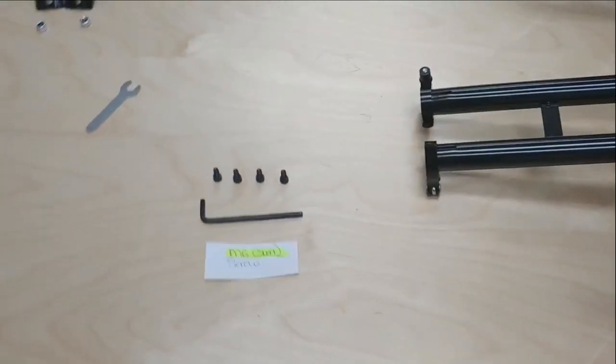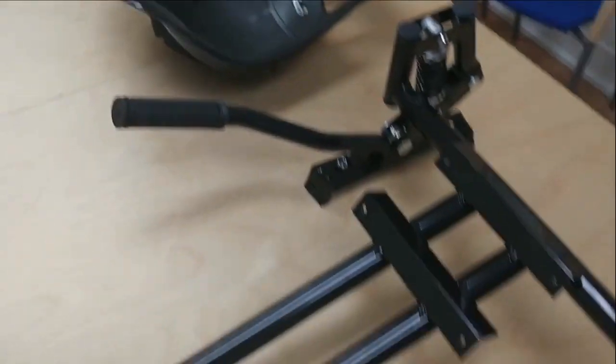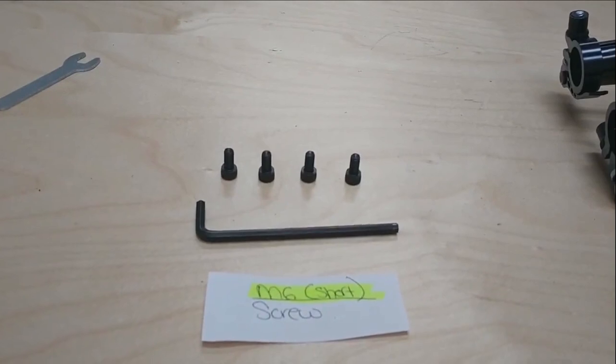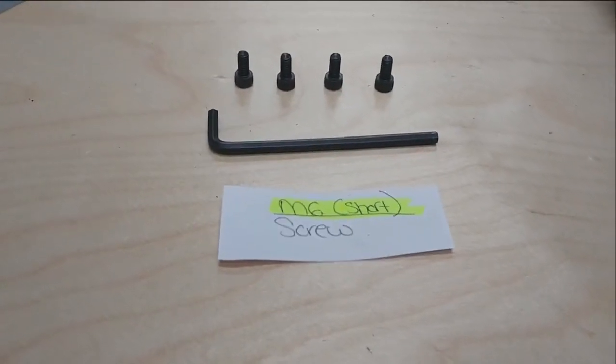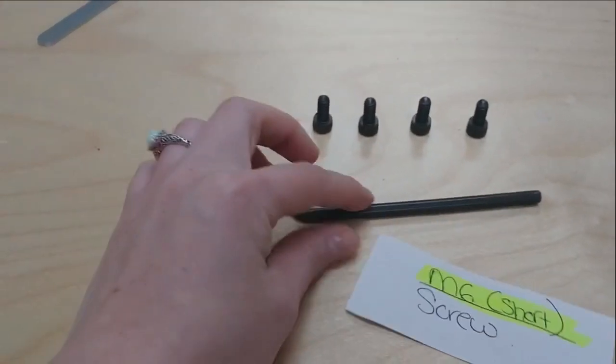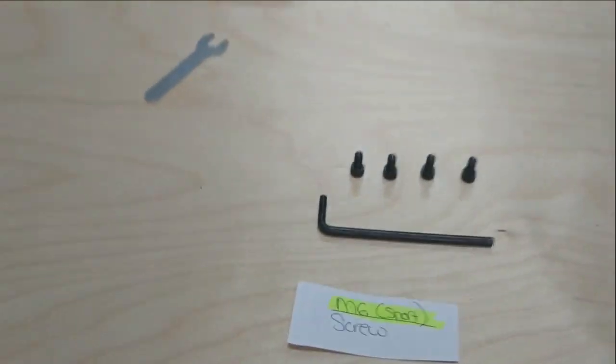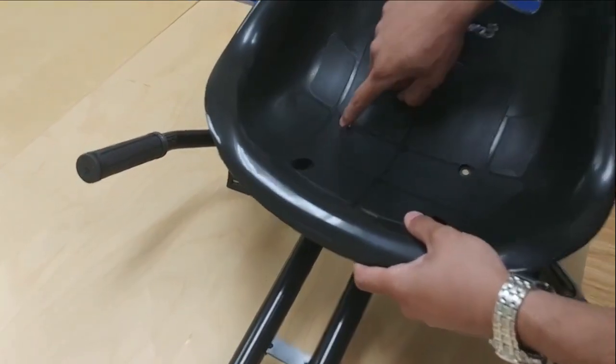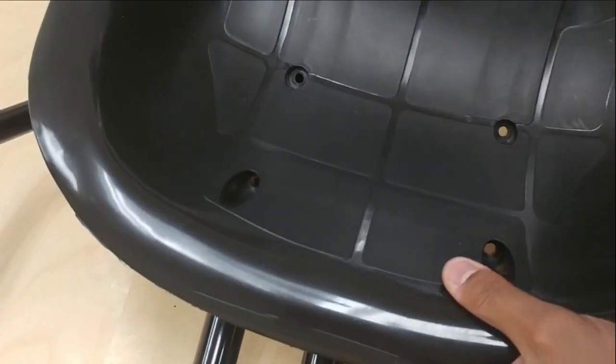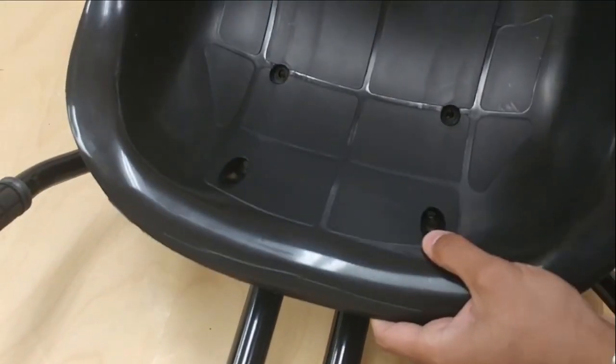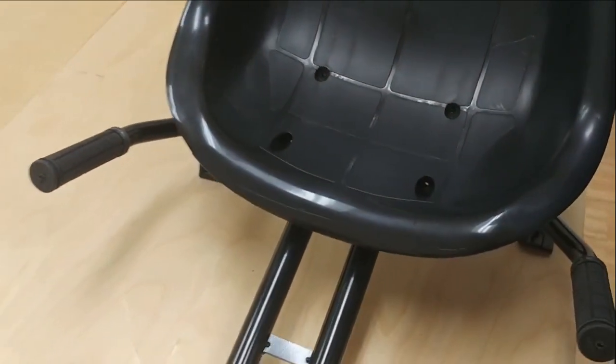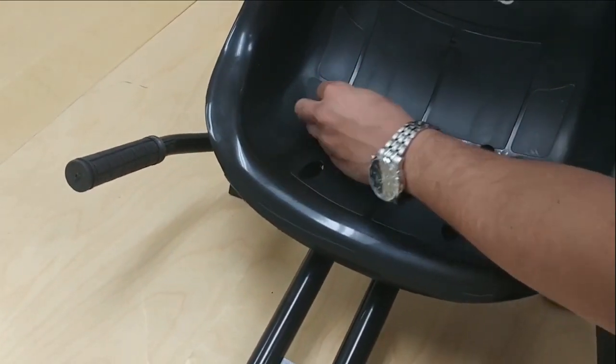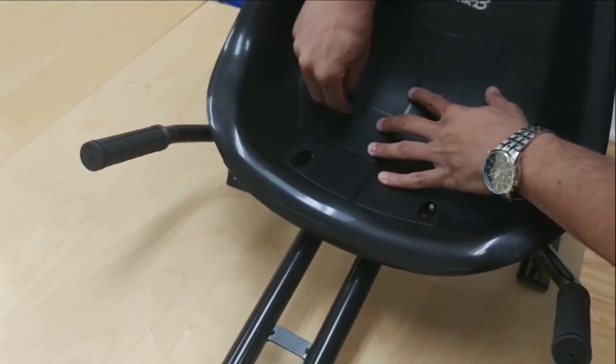So the next step would be to assemble the seat to the frame. And we are going to use the four M6 short screws, and we have an allen key for that as well. So you line up the seat with the corresponding holes on the base. And then you're going to take each screw, pop them in place, and you're going to use the allen key to screw them in place.